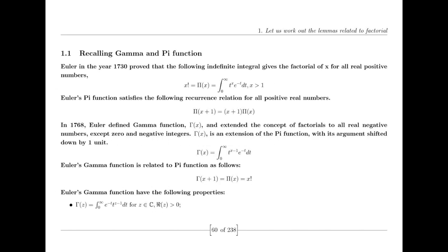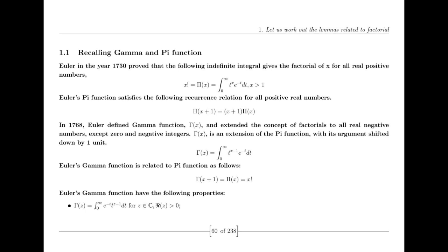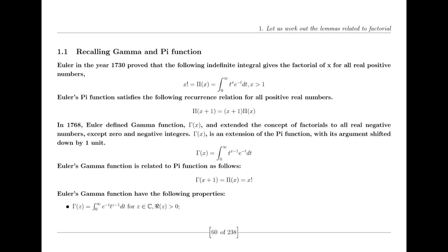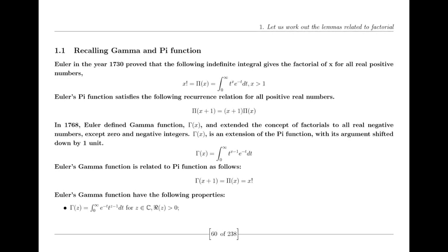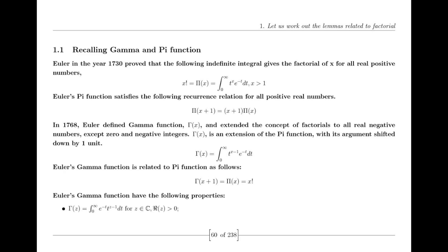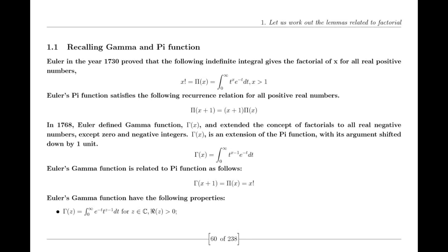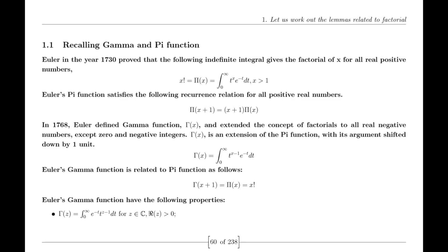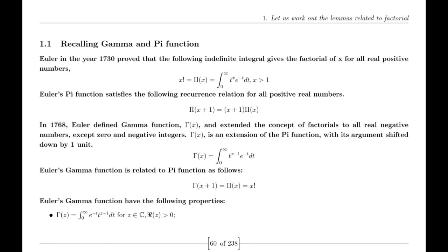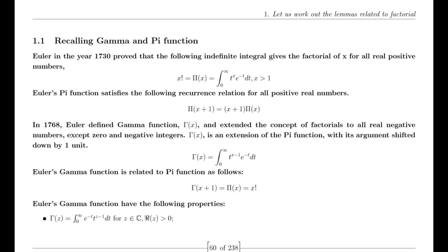By weaving together this new variant of the zeta function with Euler's zeta function, I discovered a surprising harmony. These two distinct functions acted as harmonic conjugates, complementing each other in a dance of mathematical elegance. This union provided a unified framework, allowing the zeta function to transcend its previous limitations.